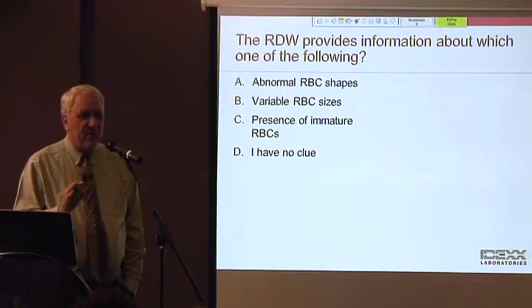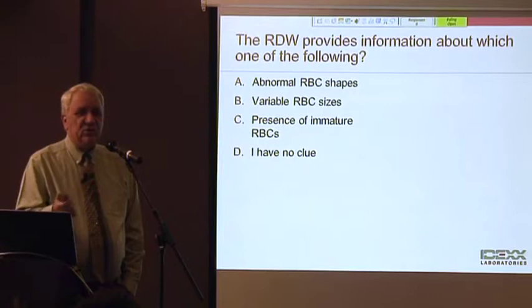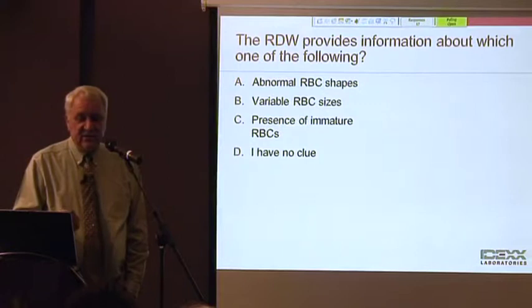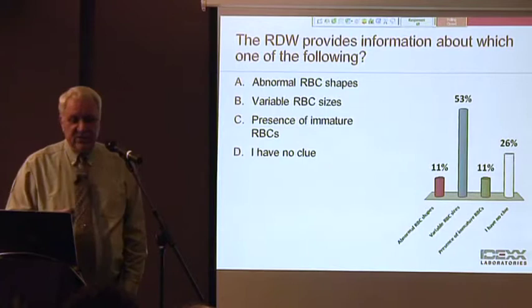The question I'm asking here is, the RDW provides information about which one of the following? Abnormal RBC shapes being present, variable red blood cell sizes being present, presence of immature red blood cells, or I have no clue. I see only about 12, 15 answers. I want a couple more. Come on. Well, good. About half of you are right.